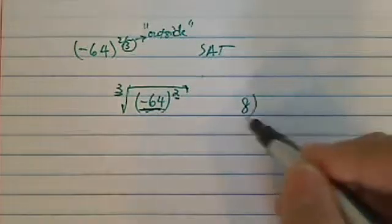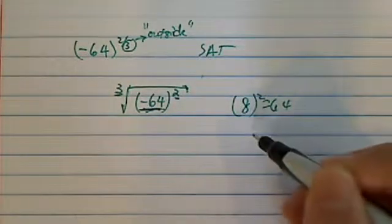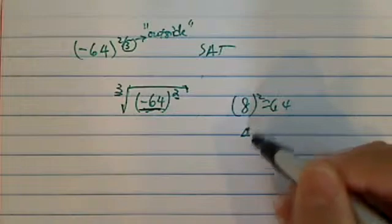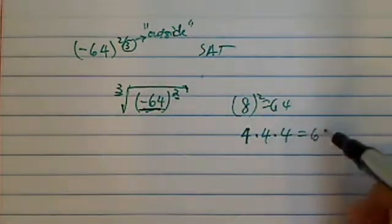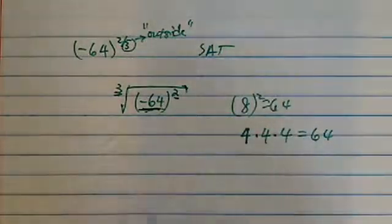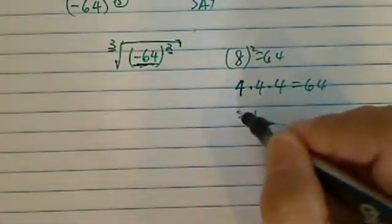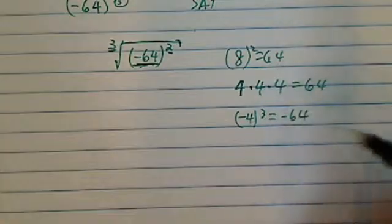Eight squared is actually—sorry, eight squared is 64, so we actually have four. Four times four times four is 16 times four, which is 64. And one of them should be negative, since we're looking for a negative, so it's actually negative four cubed that's going to make negative 64.